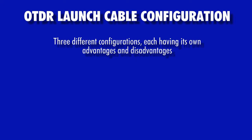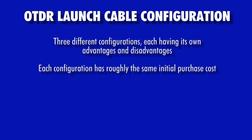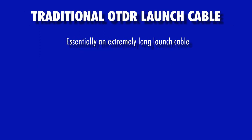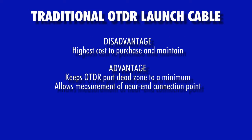There are three different OTDR launch cable configurations, each with its own set of advantages and disadvantages. It should be noted that all three different configurations have roughly the same initial purchase cost. The most common configuration is the traditional OTDR launch cable by itself, which is essentially an extremely long patch cable. While this method has the highest cost to purchase and maintain, it is also the preferred configuration from the standpoint of proper test results because it keeps dead zones to a minimum, especially at the near end connection of the link under test, allowing for proper measurement of event attenuation and event reflectance.